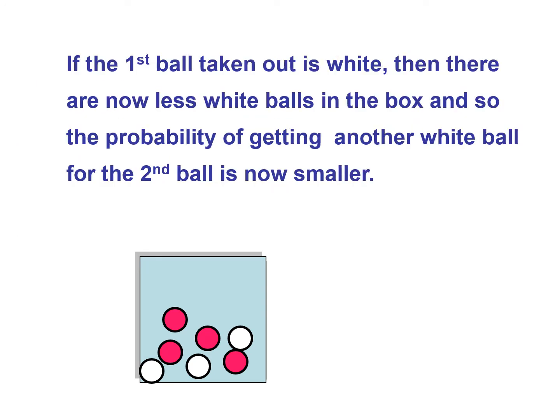If the first ball taken out is white, then there are now fewer white balls in the box. And so, the probability of getting another white ball for the second ball is now smaller.